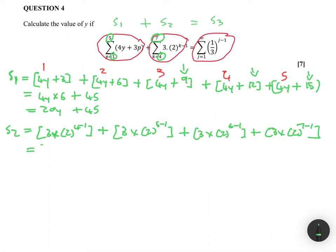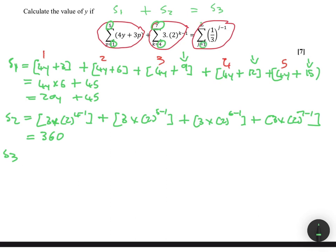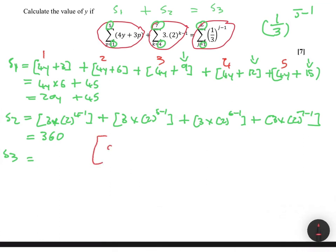Since S2 has no variable, you can just put the entire expression on your calculator and get the answer. The answer is 360. Now for S3, we're going from j equals one to j equals infinity. Going to infinity, we obviously cannot calculate individual terms, because we'll never really reach infinity. The equation is one divided by three to the power j minus one. The first term, with j equals one, gives one divided by three to the power zero, which equals one.